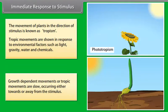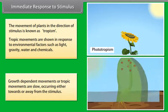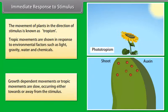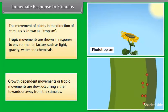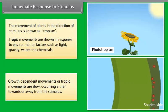Growth dependent movements or tropic movements are slow, occurring either towards or away from the stimulus.